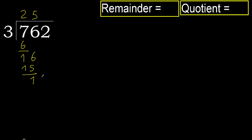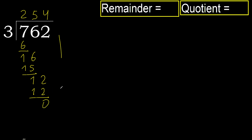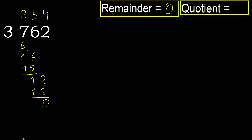Next: 12. 3 multiplied by 4 is 12, which is not greater. Subtract. Next, there is no number — therefore finish it. 0 remainder. Therefore 762 divided by 3 is 254.